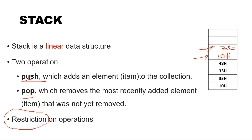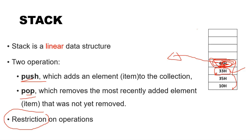Similarly, for pop operation, whenever you remove an element from the stack, you must remove the topmost element present. If there are four elements and the topmost is 48H, you must remove 48H first. If you want to pop 33H, you have to pop 48H first, then 33H becomes the topmost element and can be popped. These two restrictions — push at top only, pop from top only — make stack different from regular memory where you can store or remove data at any random address.